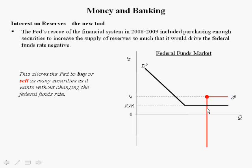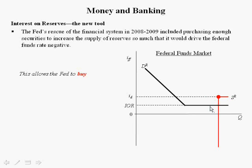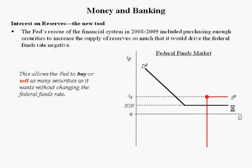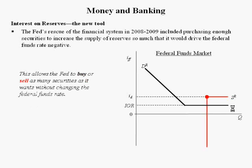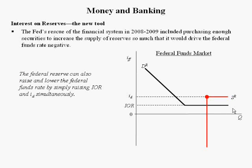If the Fed buys securities, the supply of reserves moves to the right. If it sells securities, the supply of reserves moves to the left. In either case, the Federal Funds rate remains at the level of interest on reserves. The Federal Reserve can also raise and lower the Federal Funds rate by simply raising the interest on reserves and the discount rate simultaneously. Notice that the quantity of reserves did not change.